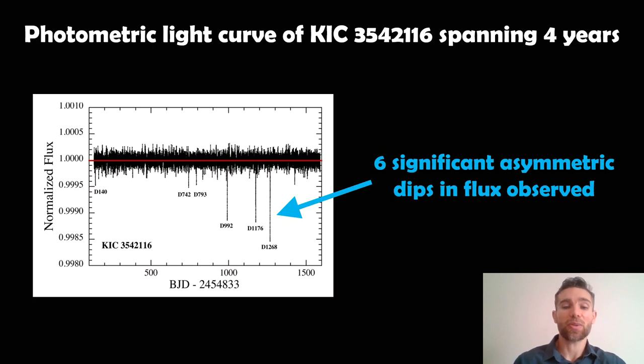And on this plot there are six denoted by D and then a number. And that gives you essentially the day number that it occurred on because the x-axis is actually days. So it gives you when it occurred. And when you zoom in on those, that's what we saw on the previous slide, they are asymmetric in shape.